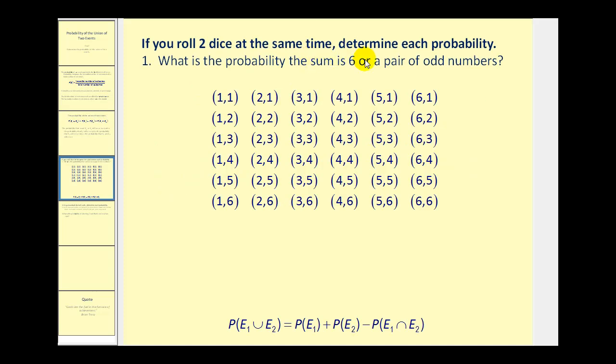If you roll two dice at the same time, determine each probability. What is the probability that the sum is six or a pair of odd numbers? Let's go ahead and call the sum of six event one, and then a pair of odd numbers event two.